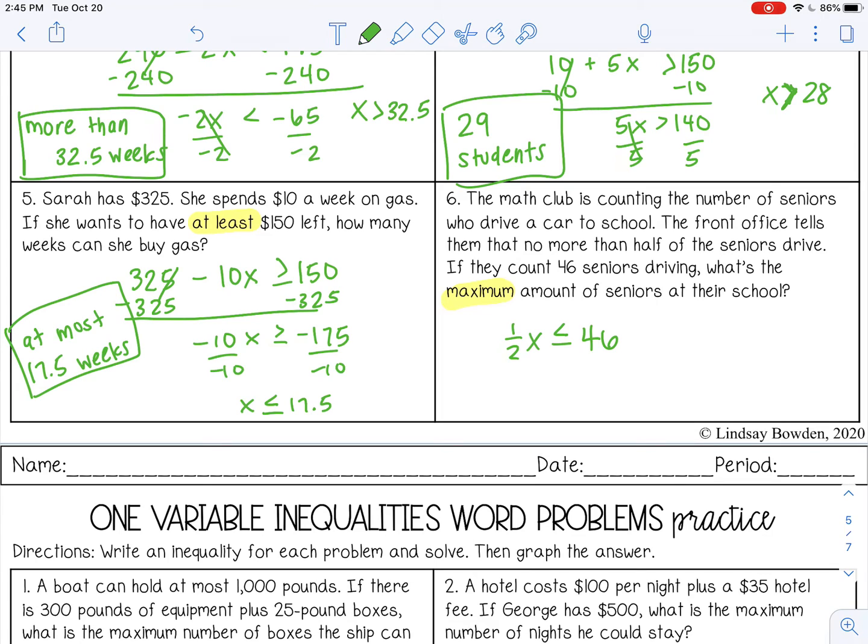So let's see how we would solve this. I can divide by one half on both sides or I can multiply by the reciprocal. So that might be a little bit easier in this case because I'm just multiplying by two. Because two times one half is just one X, which I can just write as X. And 46 times two is 92. So the maximum amount of seniors at the school is 92 seniors. You can go ahead and stop the video and complete the practice.